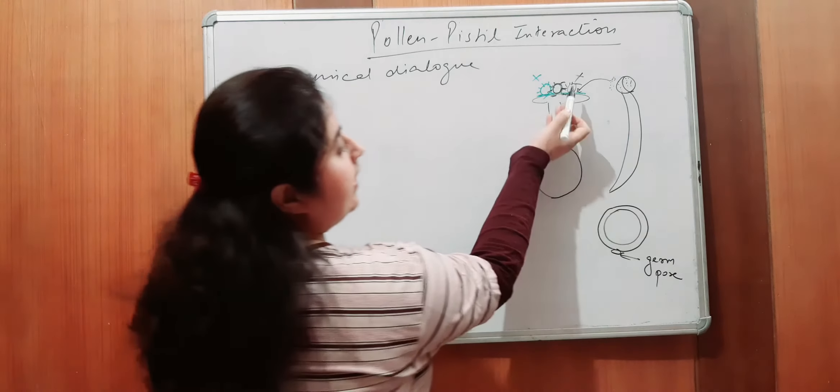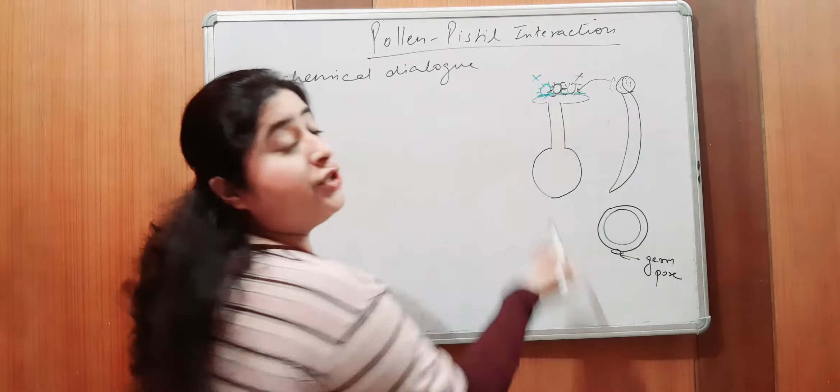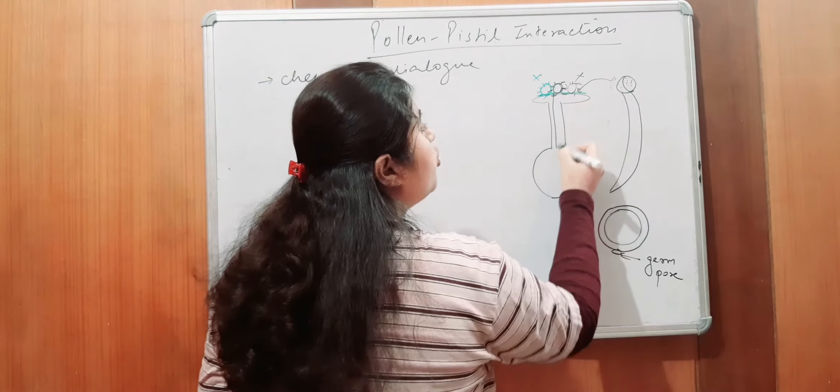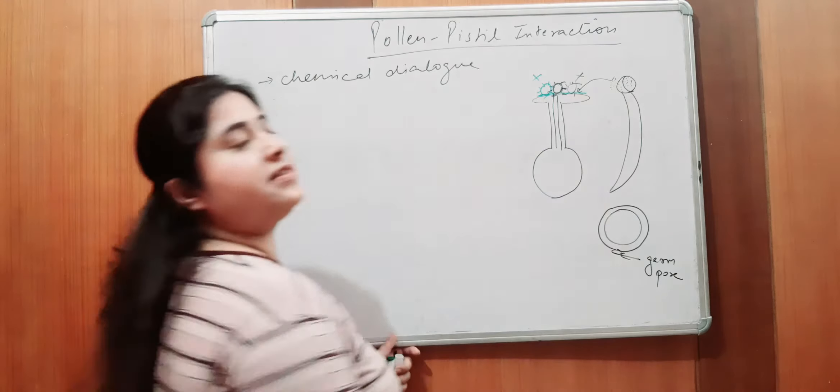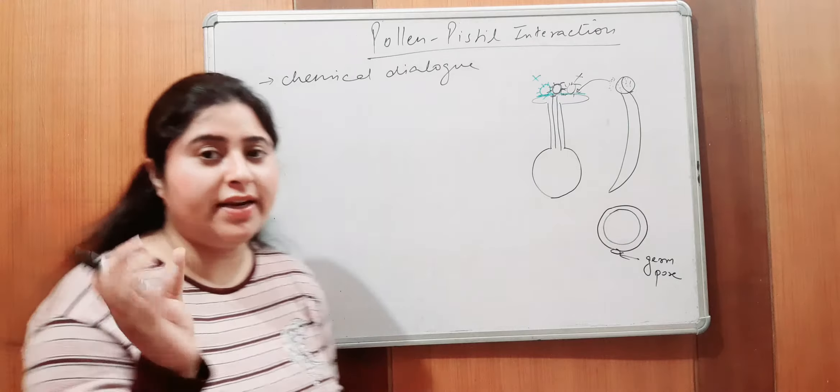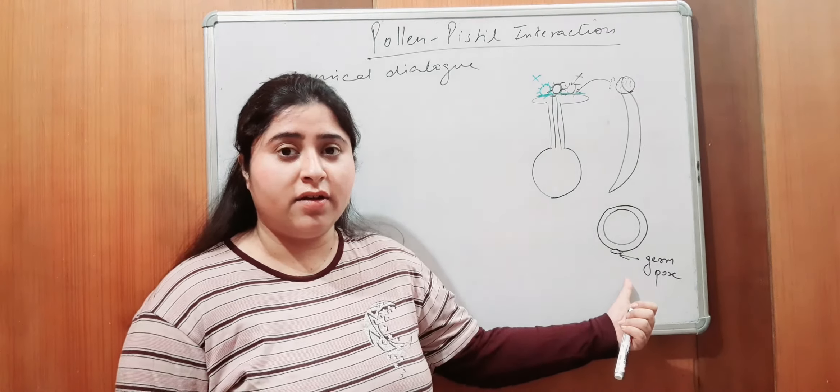So, here this pollen grain, through its germ pore, the pollen tube will arise. Please, I hope it is clear, pollen grain mein se pollen tube arise hogi. After the accepting of pollen grain by the stigma, due to some chemical secretions, toh jab us ne accept kar liya, toh woh pollen grain, pollen tube arise karega, kon se part se, through the germ pore of the pollen grain. Right?